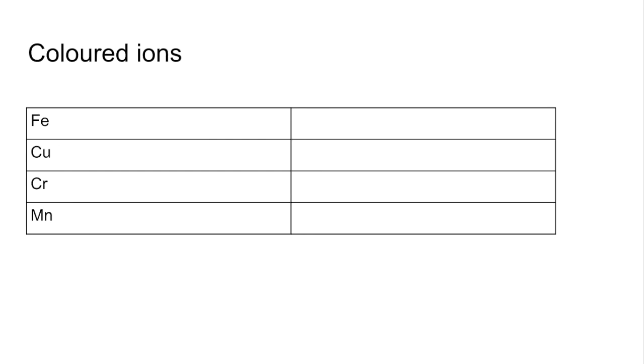Coloured ions now, again, just a few examples to illustrate the point. Iron - the complex ion of FeH2O62+ is pale green, whereas the 3 plus version is yellow. Copper - the CuH2O62+ is blue, whereas the CuCl42- complex ion is yellow.